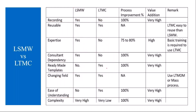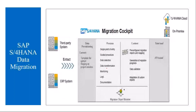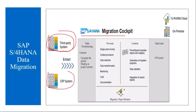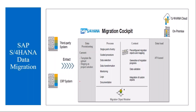The S4HANA data migration cockpit: basically, the client may have a third-party system or they may have an existing SAP ERP system. From these systems, you extract the data and then upload it into the S4HANA system. That is the process we will see today.